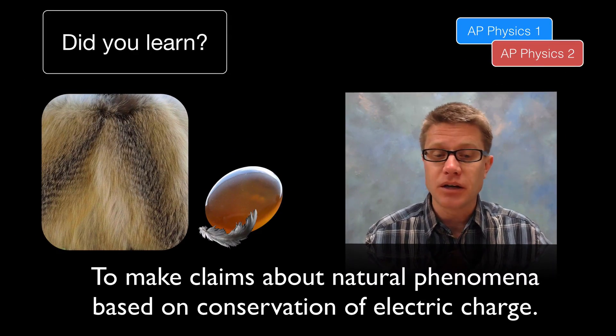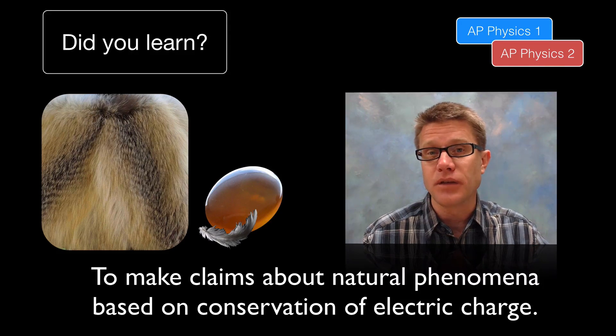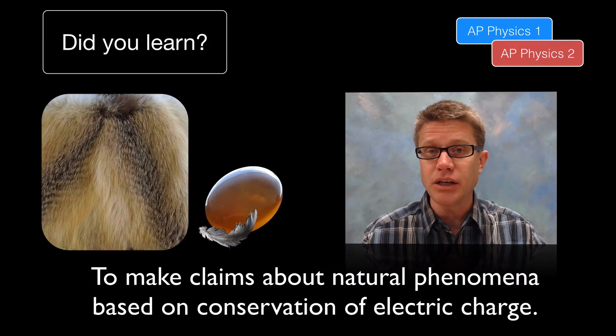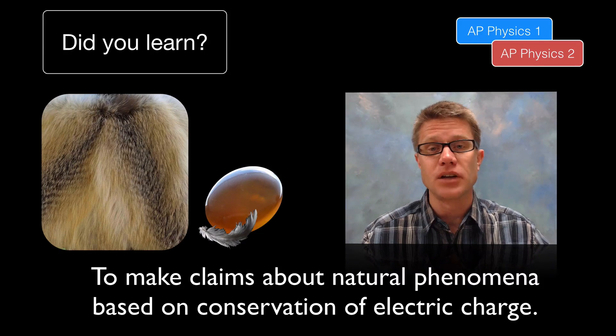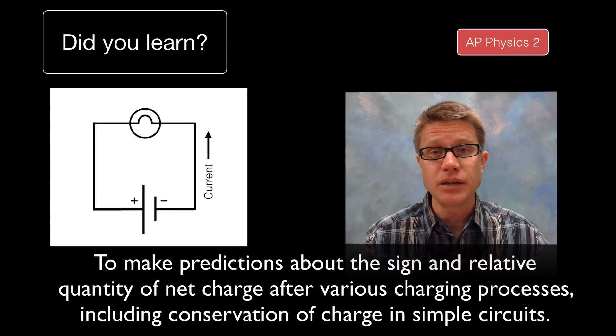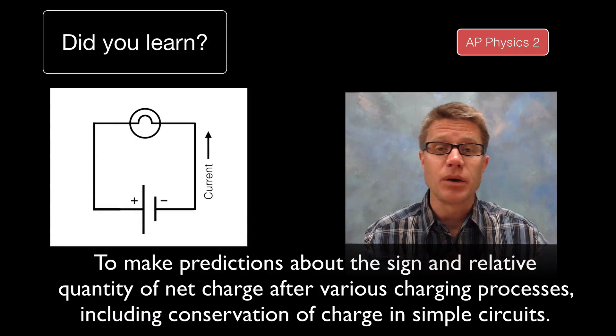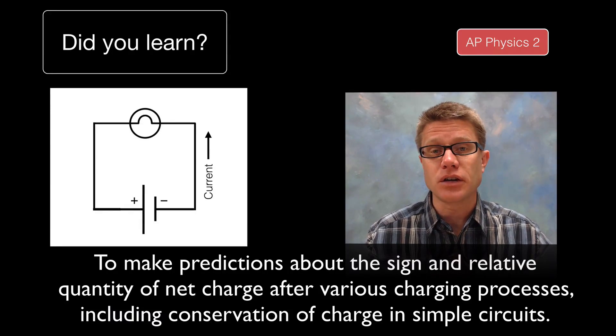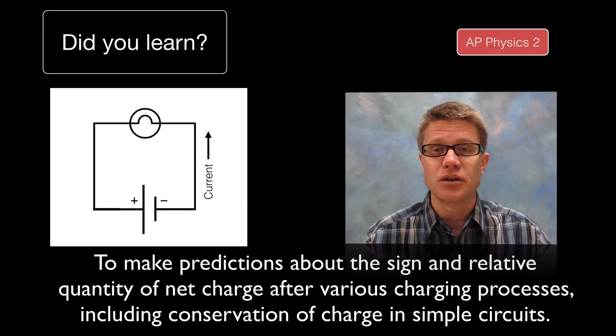So did you learn to make claims about the natural phenomenon based on the conservation of the charge? Again we are just moving it. But the sum total we had has not changed. And then do you understand that we can have charges in different places with different amounts. But even as we move that charge around something like a circuit the total amount is going to be conserved.